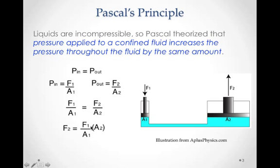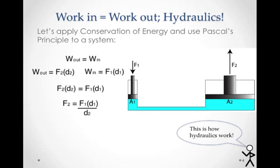Since A2 is greater than A1, then force 2 is going to be proportionally greater than force 1, and we get mechanical advantage. An easier conceptual way to look at this mechanical advantage is through this concept of work. The amount of work that we put in is going to be equal to the amount of work that we get out.